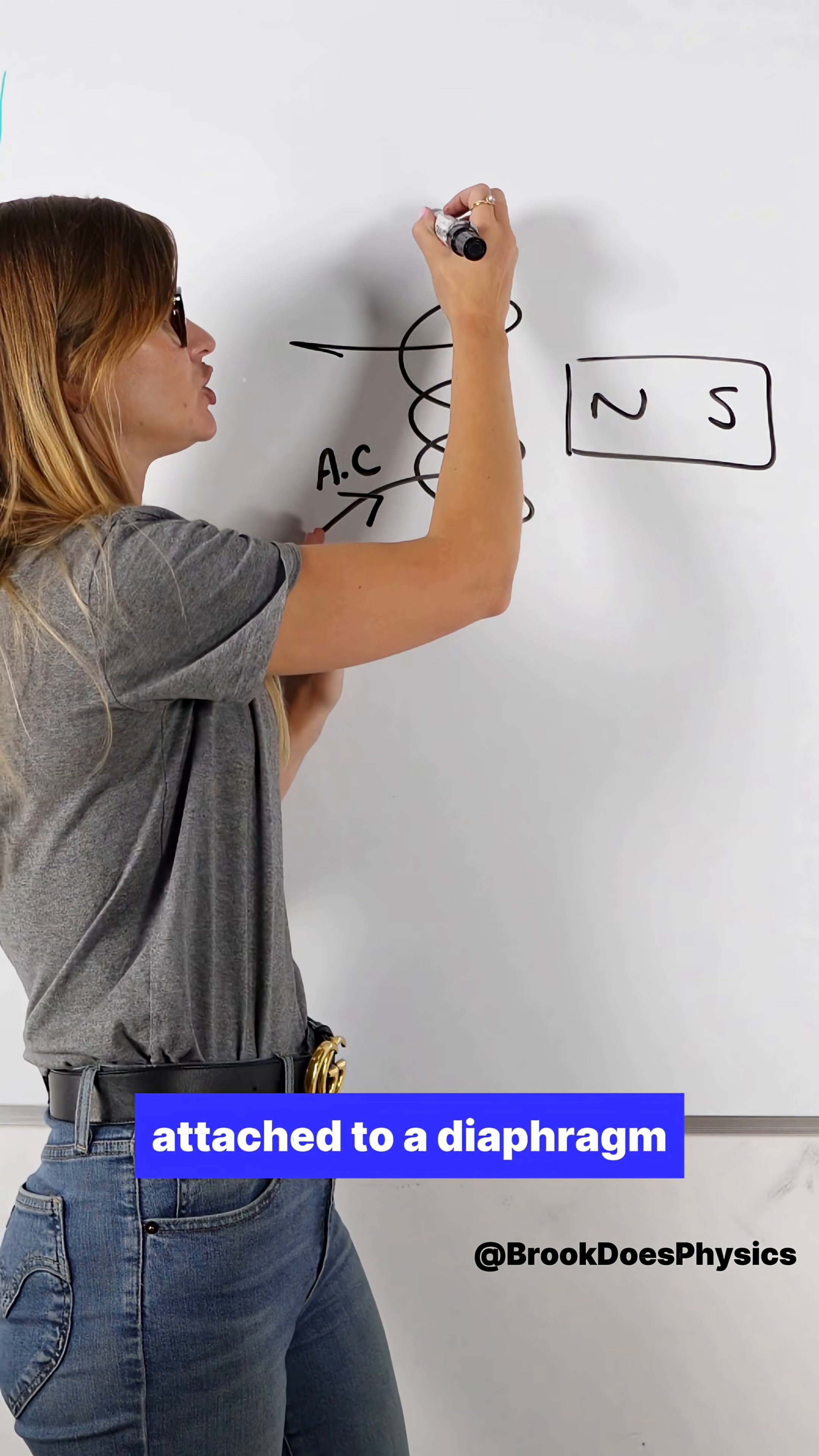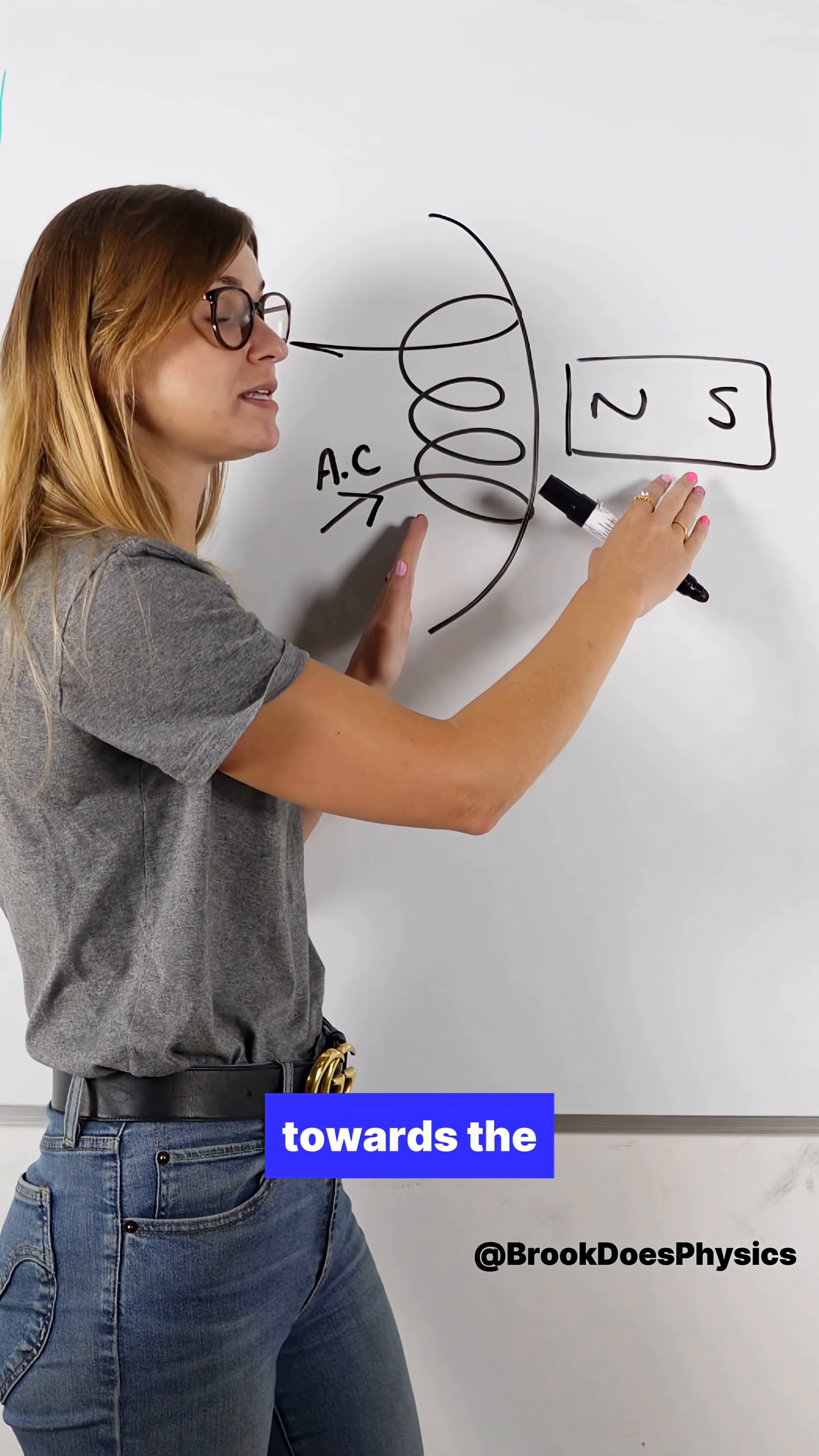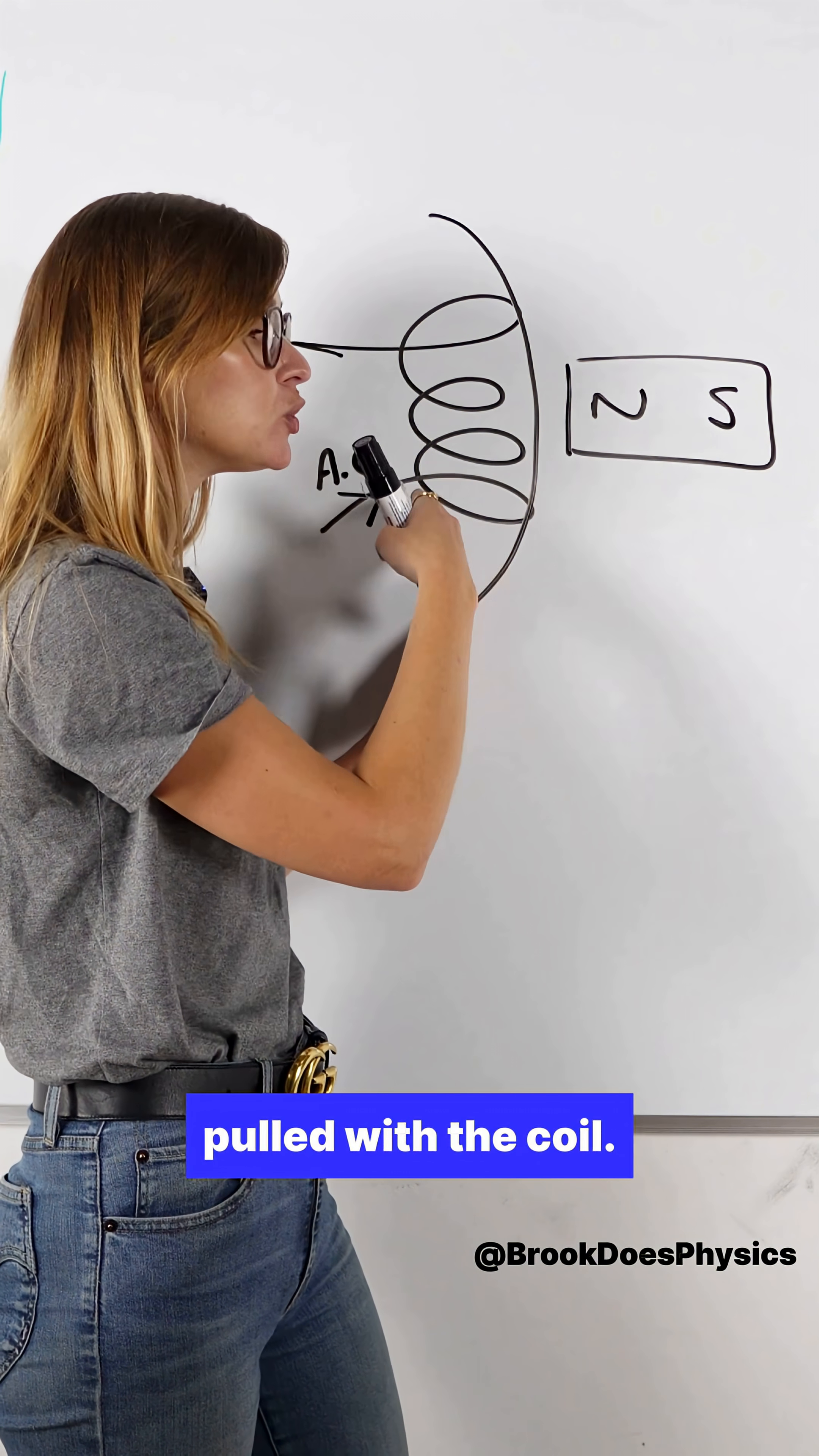The coil is then attached to a diaphragm. So as the coil is pushed and pulled towards the permanent magnet, the diaphragm also then is pushed and pulled with the coil.